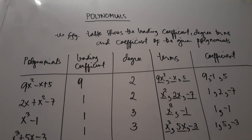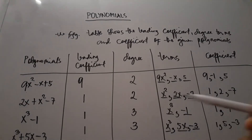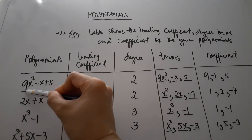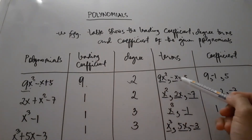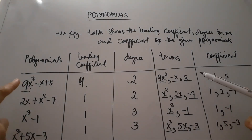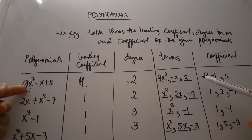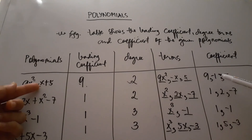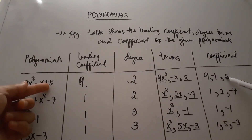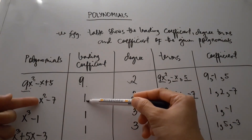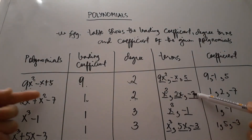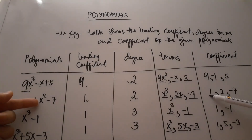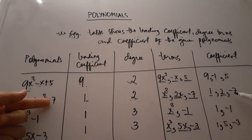For 9x squared minus x plus 9: the leading coefficient is 9, the degree is 2, it has 3 terms, and the coefficients are 9, negative 1, and 9. For x squared plus 2x minus 7: the leading coefficient is 1, the degree is 2, it has 3 terms, and the coefficients are 1, 2, and negative 7.